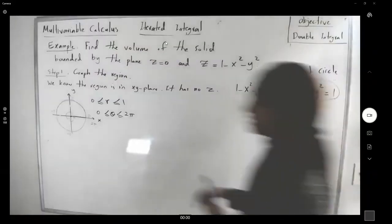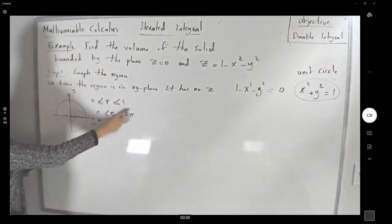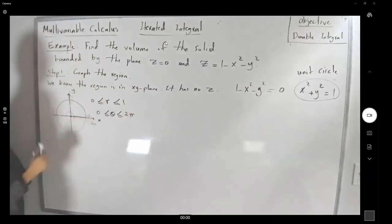Very well. So r is bounded between 0 and 1, and theta is bounded between 0 and 2π.